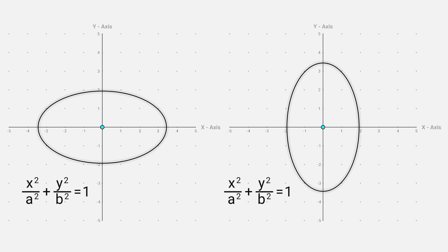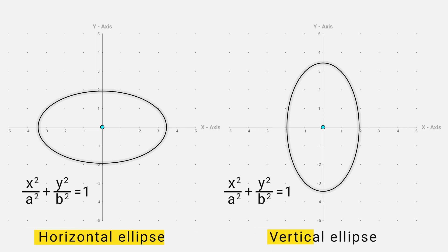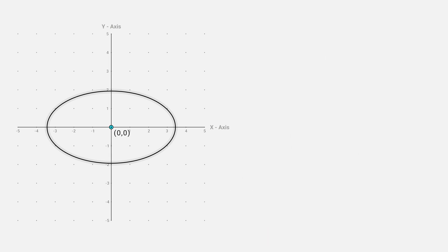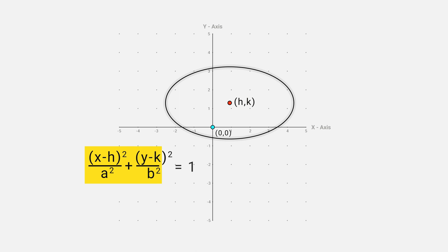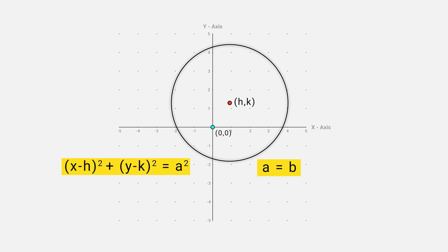There are two types of ellipse: horizontal ellipse and vertical ellipse. For a horizontal ellipse, a squared is greater than b squared, and for a vertical ellipse, a squared is less than b squared. They both have focus, vertex, and directrix, but the center of both is at (0, 0). If we shift the center of the ellipse to some point (h, k), the equation of the ellipse changes accordingly. If both a and b are equal, then the ellipse becomes a circle with radius a.